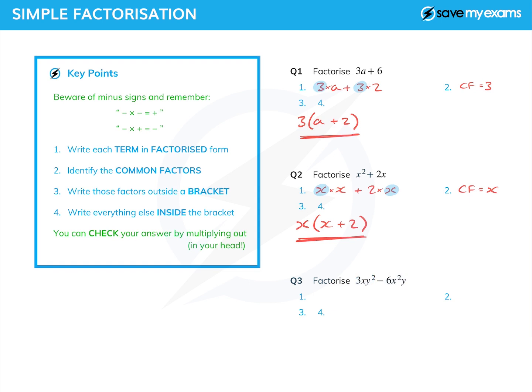When I try and write the first one as something times something, actually I've got a lot of somethings multiplied together. I've got 3 × x × y × y. For the second one, I've got -3 × 2 × x × x × y.